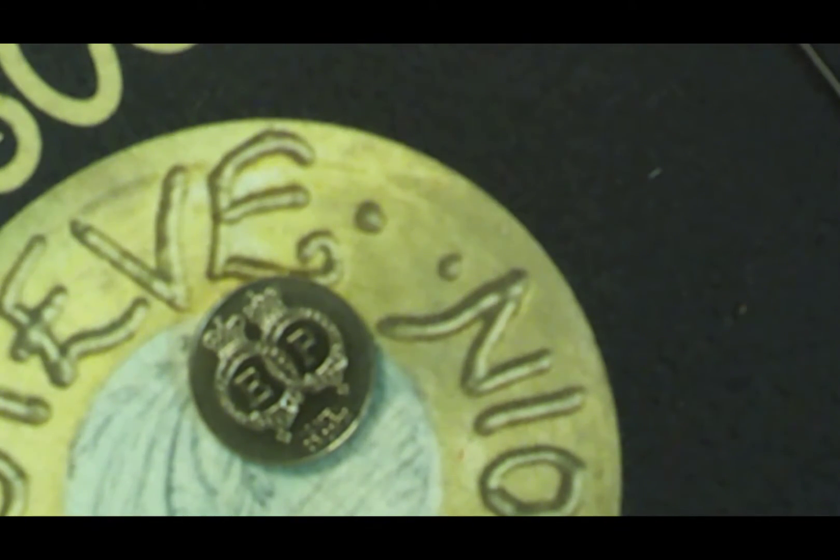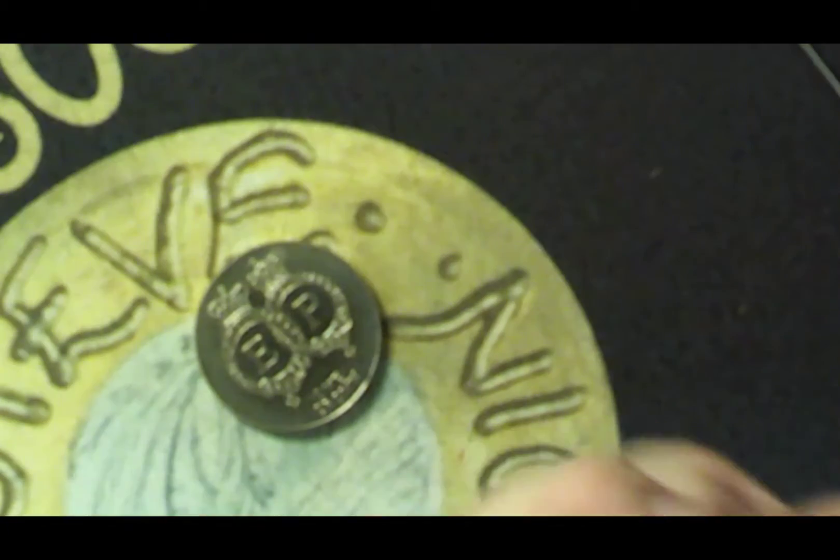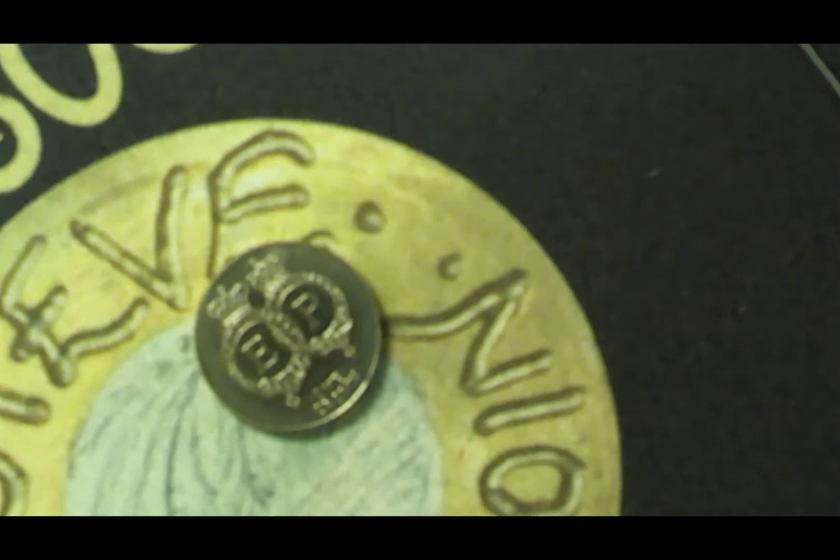So now, 1947, 57, 67, 77, 87, 97, 2007... that's 60... 65 years.